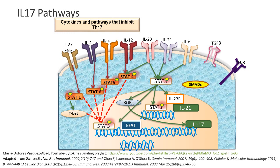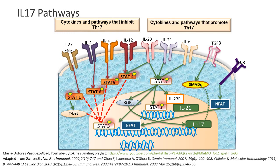Through STAT-3 phosphorylation, these signals also increase expression of the IL-23 receptor, augmenting the response to IL-23 into TH17 differentiation. The TGF-beta receptor through the SMADs also has a positive effect on interleukin-17 production. Finally, the T-cell receptor through NFAT directly goes into the nucleus and stimulates IL-17. These are basically the pathways that promote TH17 differentiation.